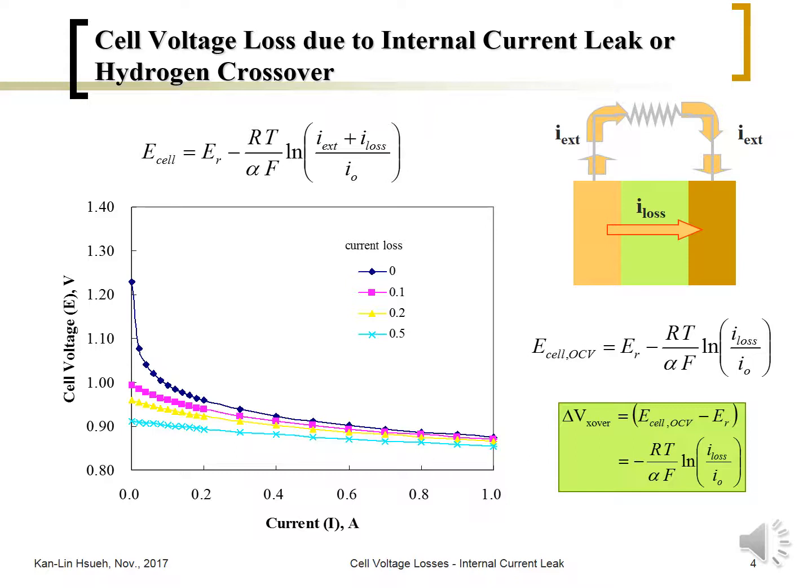But if the OCV is the same, but when you start drawing current and then the cell voltage drops quickly, that means the electrical activity is low. That means either the catalyst or the electrode surface area was blocked, or the electrode was passivated.